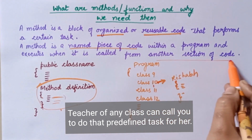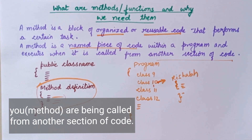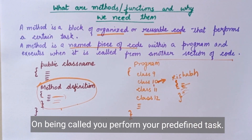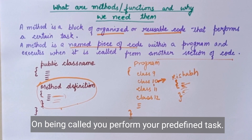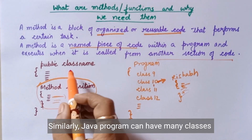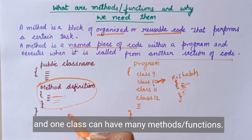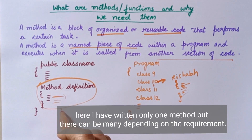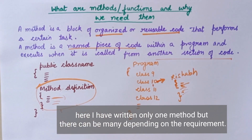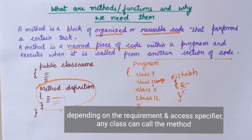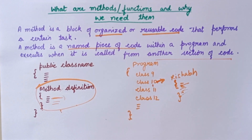Class 12 teacher has called you — this is another section of code; you can be called from somewhere else. When you are called, your job is shown in this example — your job is done. So from any class or from anywhere, whenever needed, that method can be called, and after calling, that method will do that particular work. So this is a basic concept.